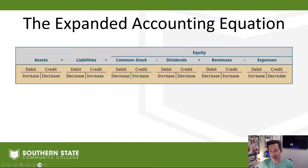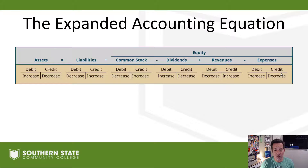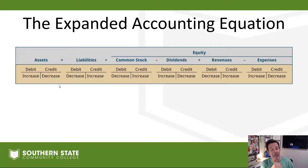Expenses increase on the debit side and decrease on the credit side. We're going to start making transactions in our next video and learn how to journalize them. At that point you have to know how to make an account go up or down. For example, if cash is coming in the door, the cash account is an asset account — it goes up on the debit side. You may want to print off this slide or write it down, because it's information you'll need to refer back to until you have it memorized.